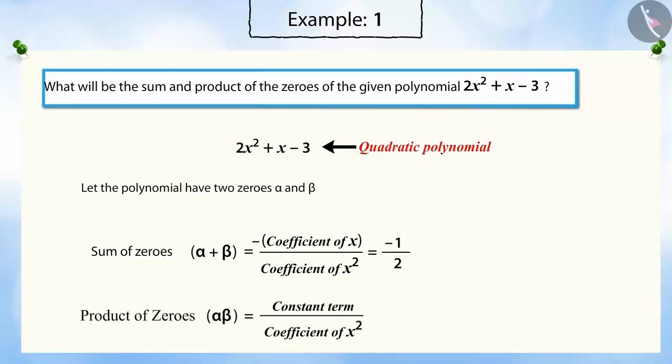Similarly, we know that the product of the zeros of the quadratic polynomial is the ratio of the constant term of the quadratic polynomial to the coefficient of x². Substituting the values of the constant term and coefficient of x² gives the product of the zeros as -3/2.